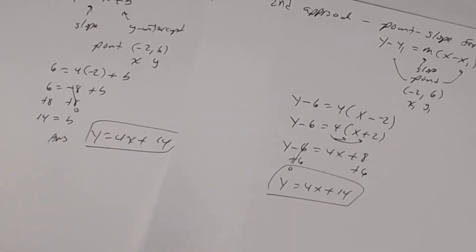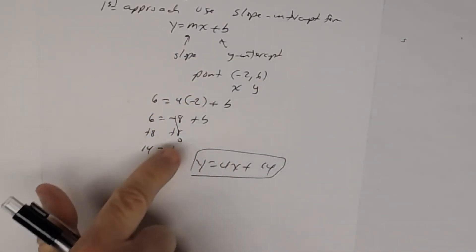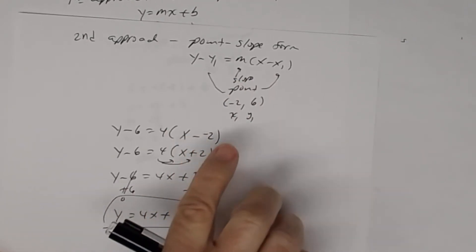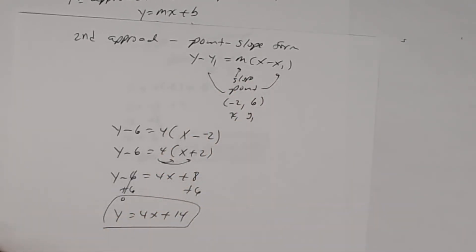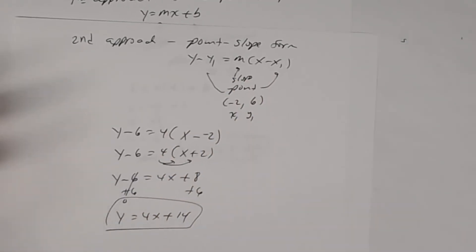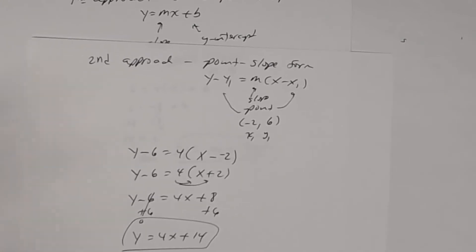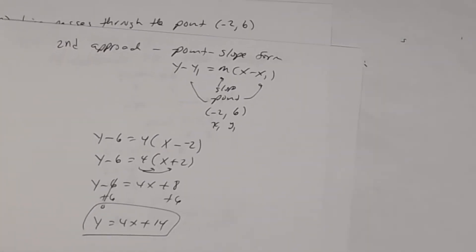First approach used slope-intercept form; second approach used point-slope form. You have to know both in order to use these for other topics coming up.